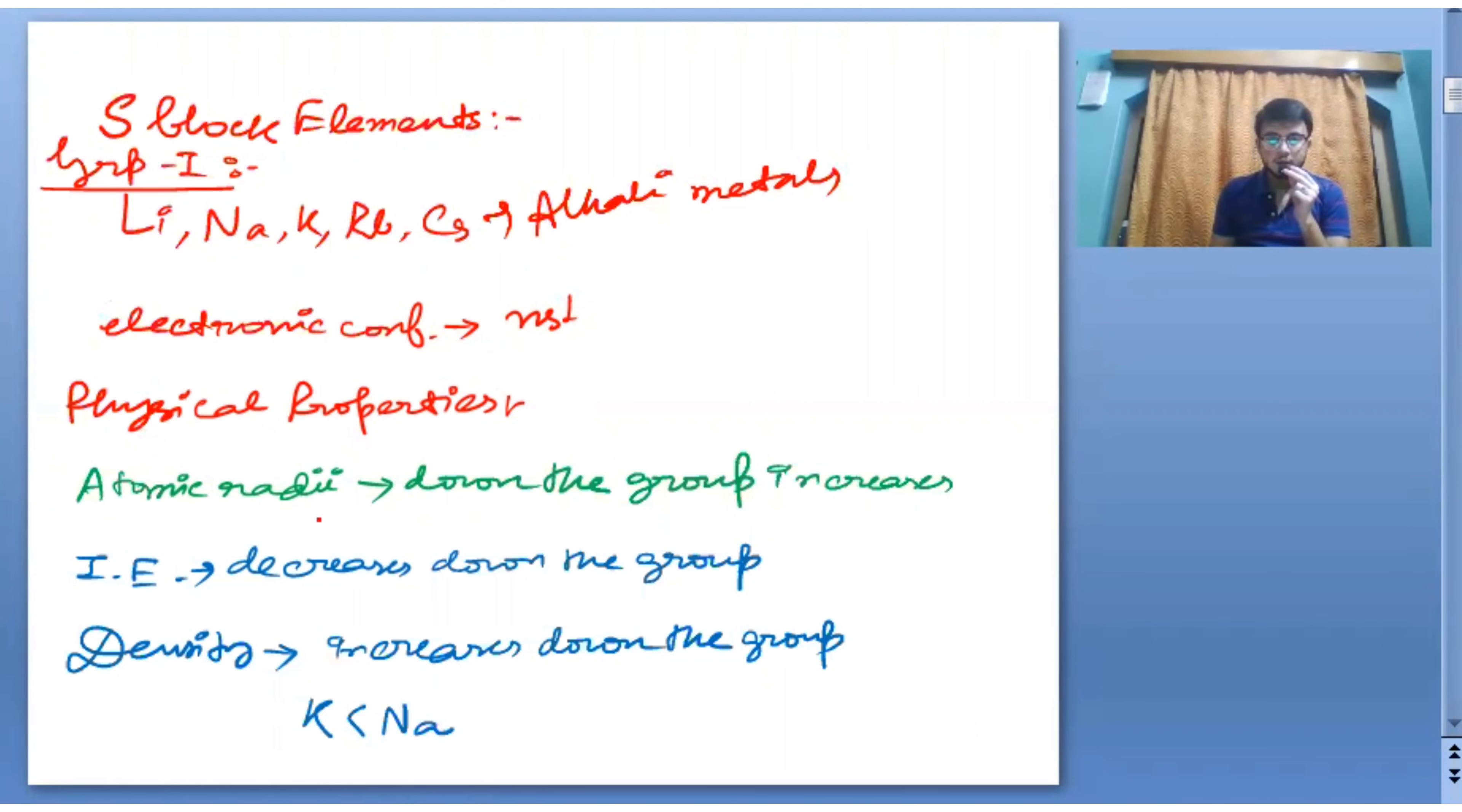Physical properties: atomic radii down the group increases with no exception. IE or ionization enthalpy decreases down the group. Density increases down the group, but here is an exception - Na has more density than K.